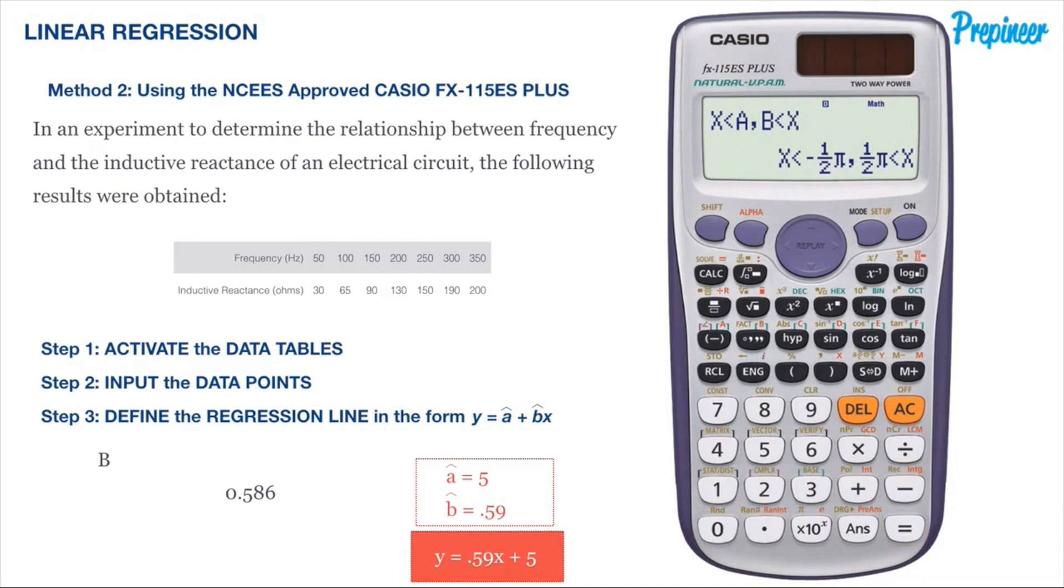Remember, in that same regression menu in our calculator, we can get that goodness of fit r by selecting the option in the same way we did for a and b. In this case, we get a value of 0.994, telling us that our fit is good and nearly a perfect straight line.